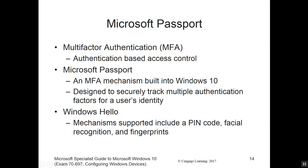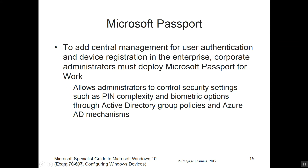We also have Windows Hello. The mechanisms associated with Windows Hello include a PIN code, facial recognition, and biometrics such as fingerprints — getting into the biometric side of things. Passport adds centralized management of authentication and device registration in the enterprise. Corporate administrators have to employ Passport for work.